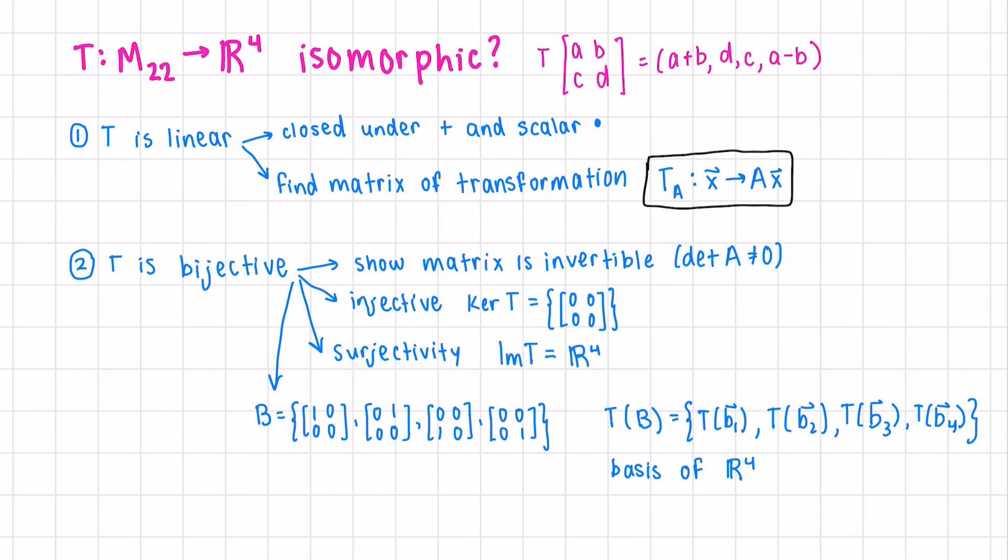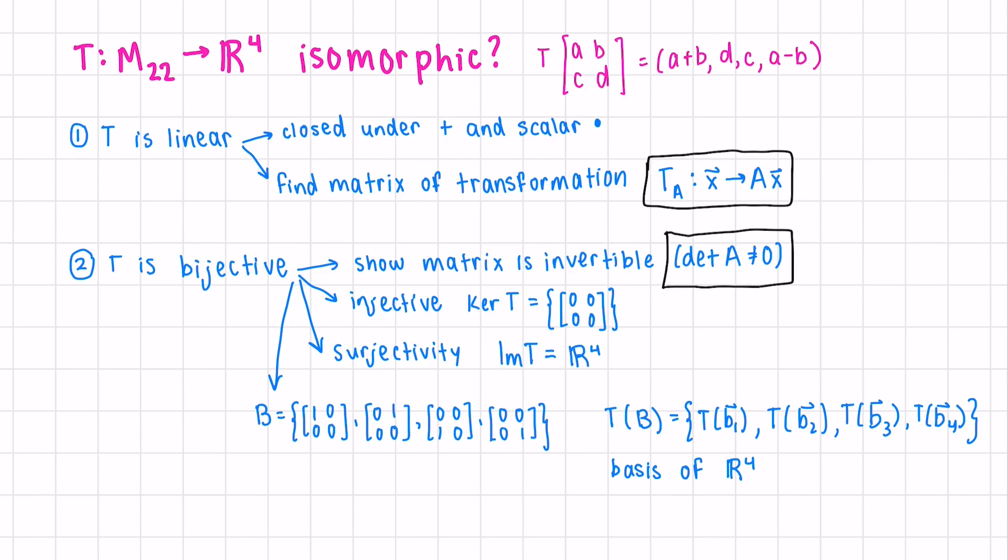For this question, let's go with finding the matrix of the transformation and checking the determinant to see if our matrix is invertible. In order to find the matrix of a transformation, we need to be going from R⁴ to R⁴. In this case, we're starting in M₂₂, but we need a column vector in order to multiply correctly. Luckily, we know that M₂₂ is isomorphic because it's four-dimensional. It has to be isomorphic with R⁴. This is coordinate isomorphism.